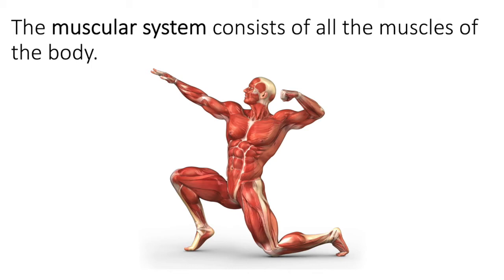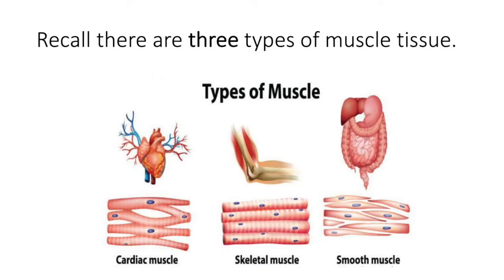We will also explore the micro anatomy of skeletal muscles, particularly skeletal muscle cells, so that we can understand muscle contraction. Now recall from our module on tissue that there are actually three types of muscle tissue: skeletal muscle tissue, cardiac muscle tissue, and smooth muscle tissue. Much of this module focuses on skeletal muscle tissue, but it's important to remember that the other two types of muscle tissue are also part of the muscular system. So let's review the three types of muscle tissue.